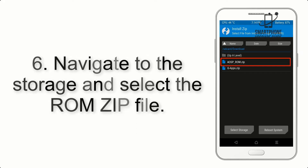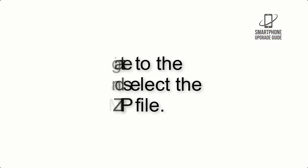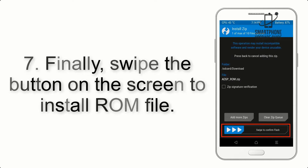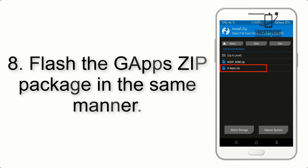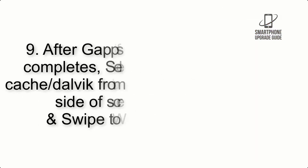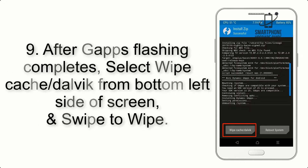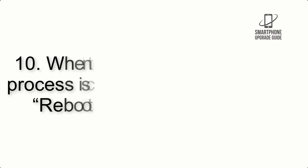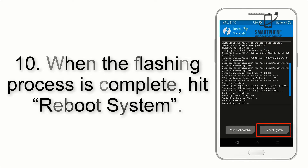Step 5: Go back to the recovery main screen and tap on the Install button. Step 6: Navigate to the storage and select the ROM zip file. Step 7: Swipe the button on the screen to install the ROM file. Step 8: Flash the GApps zip package in the same manner.